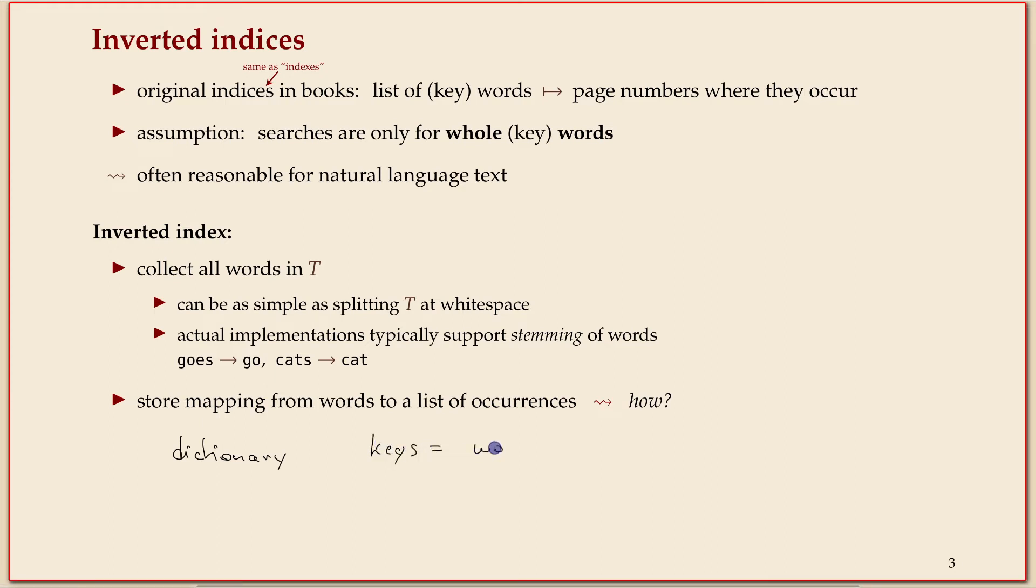One way to implement it would be a dictionary that maps from strings to lists of integers. So the keys are the words that occur in the text and the values is the list of starting indices, say, of occurrences.